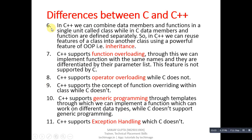In C++, we can combine data members and functions into a single unit known as a class, while in C, members and functions are defined separately. In C++, we can reuse features of a class in another class using a powerful feature known as inheritance. Already defined classes can be reused in newly defined classes — this feature is available in C++ but not in C.